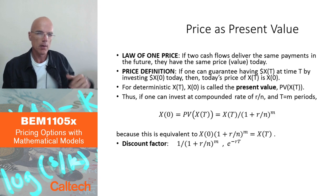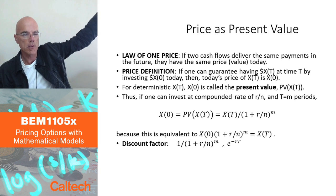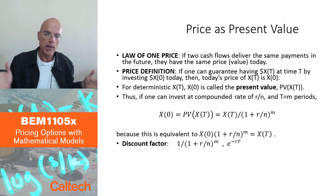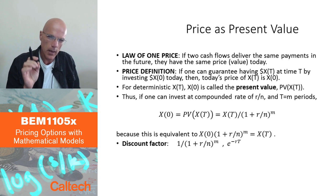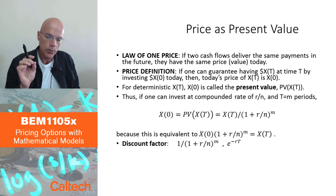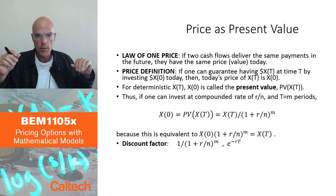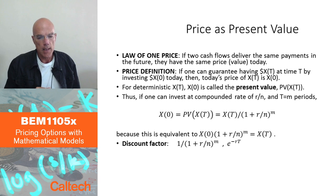Now we want to reverse this procedure: given something I will receive in the future, how much is it worth today? This is present value computation. I'm going to make it slightly more complex than necessary because I'll apply the same principle we'll use for pricing random payoffs. I'm going to use what's called the law of one price.